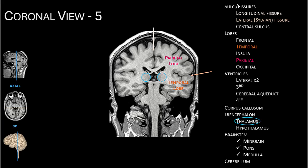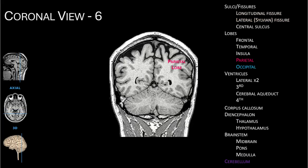We also see the posterior region of the thalamus and the already noted brain stem, including the midbrain, pons, and medulla. This is our last coronal view. The posterior location lets us see the parietal lobe, occipital lobe, and cerebellum.